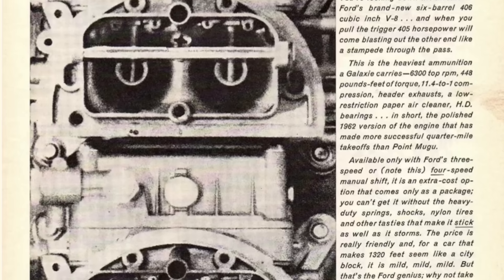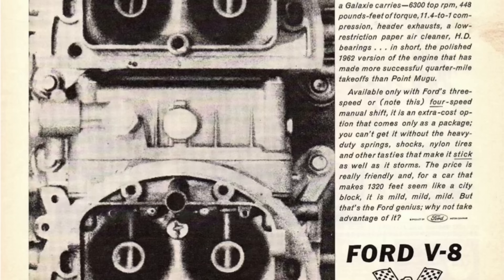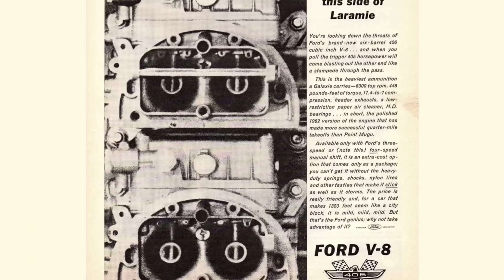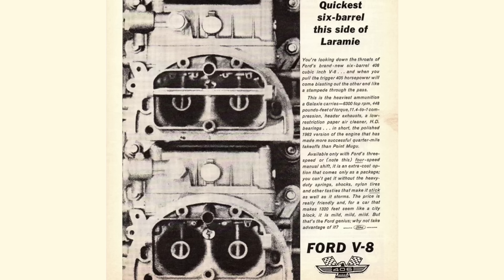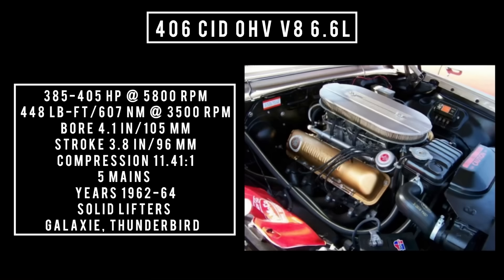It's important to note there are two versions of the 406. The B-code Thunderbird 406 used an aluminum dual-plane intake manifold with a single Holley four-barrel carburetor at 600 CFM. The more powerful G-code used an aluminum intake with three two-barrel Holley carburetors with a combined 840 CFM. Introduced in 1962 and offered for only two years: 406 cubic inch displacement overhead valve V8, 6.6 liters. It's good for anywhere between 385 to 405 horsepower at 5,800 RPM, up to 448 pound-feet or 607 newton meters at 3,500 RPM, with a bore of 4.1 inches and a stroke of 3.8 inches. Compression was 11.4 to 1. Five main bearings. Offered from 1962 to 1964, had solid lifters, and could be found in the Galaxy.